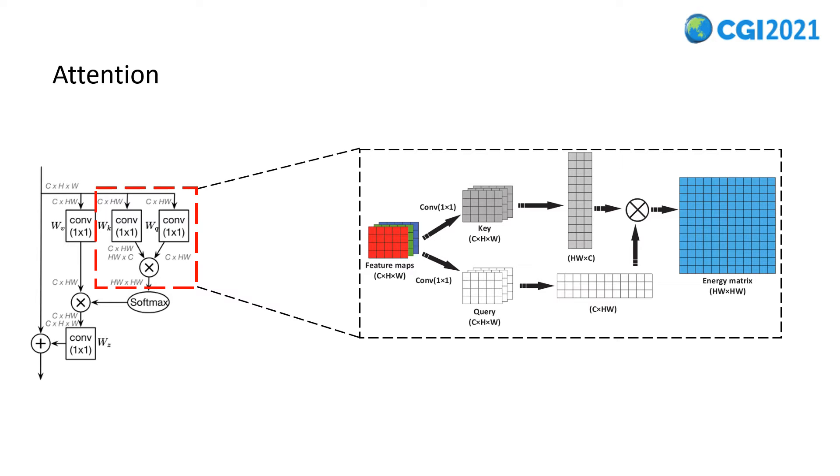Firstly, the image is flattened, so the shape of the matrix is transformed into HW times C and C times HW. Then the two matrices are dot multiplied to get the energy matrix whose shape is HW times HW.